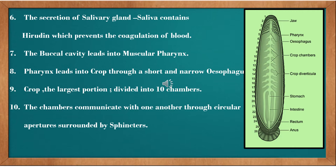The crop is the largest portion of the alimentary canal, and it has ten chambers. In the diagram you can see the ten chambers right from the pharynx. The chambers communicate with one another through a circular aperture, and between each two crop chambers there is a small opening supported by a sphincter muscle.